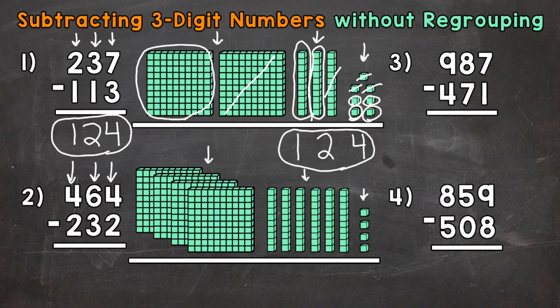So let's start with the ones. Four ones minus two ones — let's subtract two ones: one, two. And then let's see how many we have left: one, two. So we put a two in the ones place in our answer.